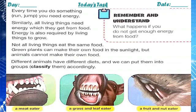Every time you do something — run, jump — you need energy. Similarly, all living things need energy, which they get from food. Energy is also required by living things to grow. Food is really important for all living things; it gives energy to grow and to stay healthy. Not all living things eat the same food. Green plants can make their own food in sunlight, but animals cannot make their own food.